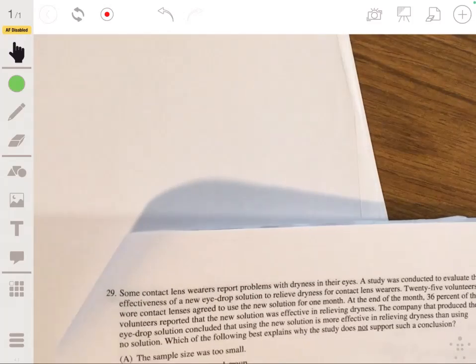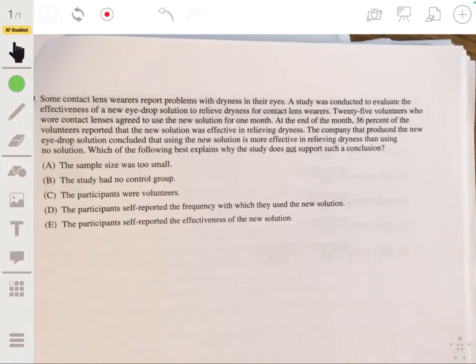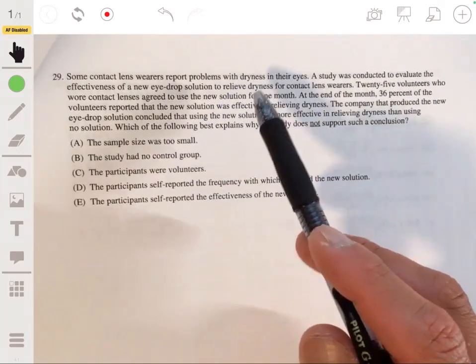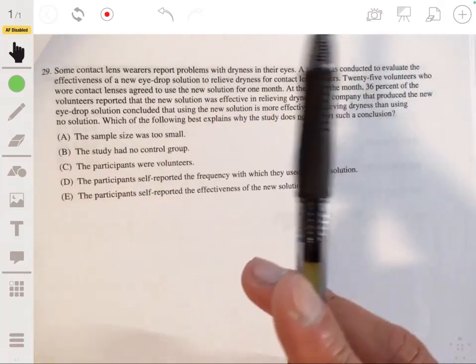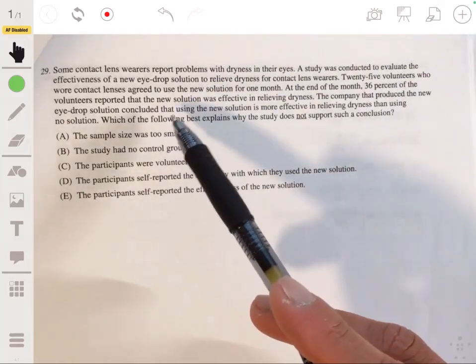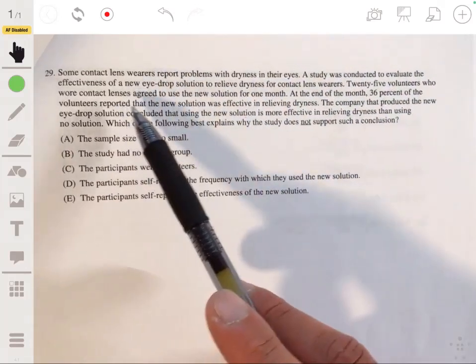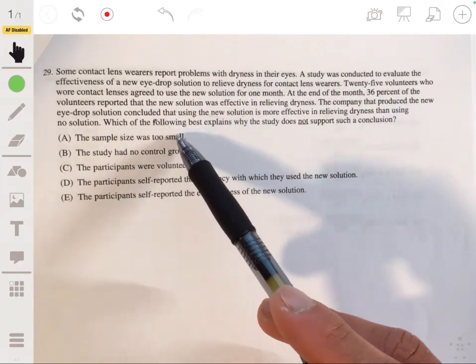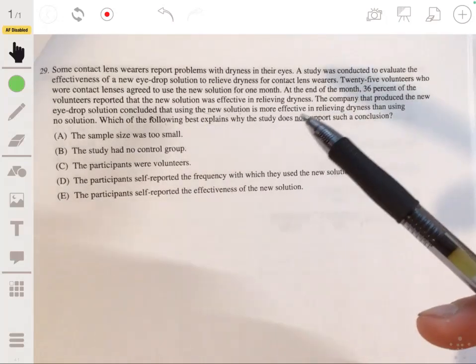All right, 29. Some contact lens wearers report problems with dryness in their eyes. A study was conducted to evaluate the effectiveness of a new eye drop solution to relieve dryness for contact lens wearers. 25 volunteers who wore contact lenses agreed to use the new solution for one month. At the end of the month, 36% of the volunteers reported that the new solution was effective in relieving dryness. The company that produced a new eye drop solution concluded that using the new solution is more effective in relieving dryness than using no solution. Which is the following best explains why the study does not support such a conclusion.